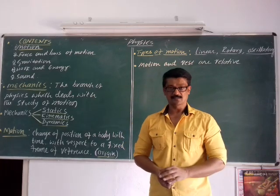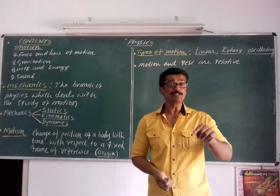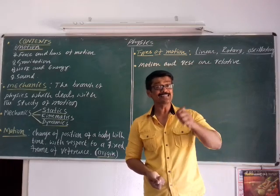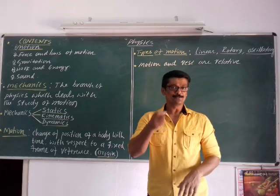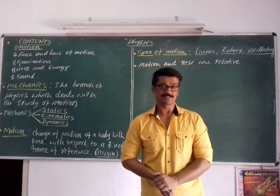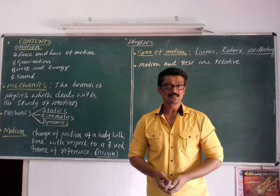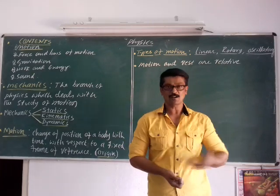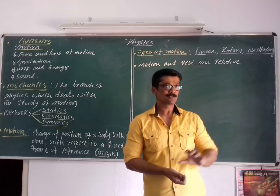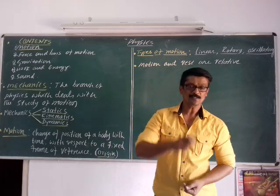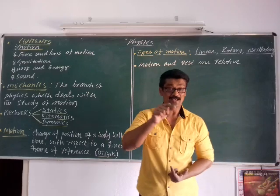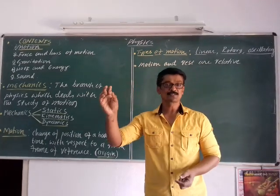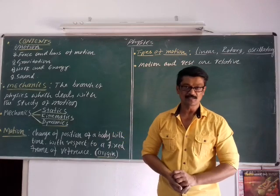In some cases, the motion is inferred indirectly. Through indirect evidences, we infer the motion of objects. For example, we can't see the moving air. But we infer the motion of air by observing the motion of leaves and branches of the tree.